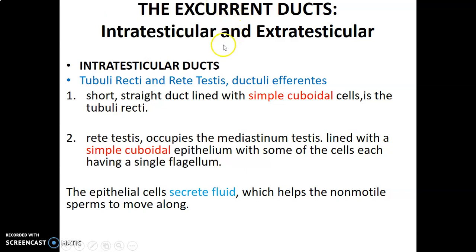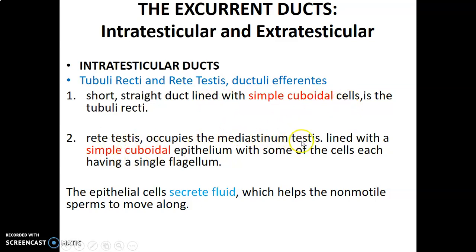Then we go to the excurrent ducts. We have intratesticular and extratesticular ducts. The intratesticular ducts within the testis include the tubuli recti, rete testis, and ductuli efferentes. The tubuli recti are short and straight, lined with simple cuboidal epithelium. The rete testis usually occupy the mediastinum of the testis, also lined with simple cuboidal epithelium, with some cells having a single flagellum. The epithelial cells secrete fluid which helps the non-motile sperms to move along.